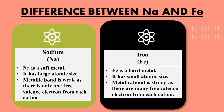Sodium is a soft metal as it has large atomic size and a weak metallic bond, while iron is a hard metal as it has small atomic size and a strong metallic bond. The metallic bond in sodium is weak because there is only one free valence electron available from each cation. In iron, there are many free valence electrons available from each cation, so the attraction between cation and electrons is stronger — that's why iron is hard and sodium is soft.